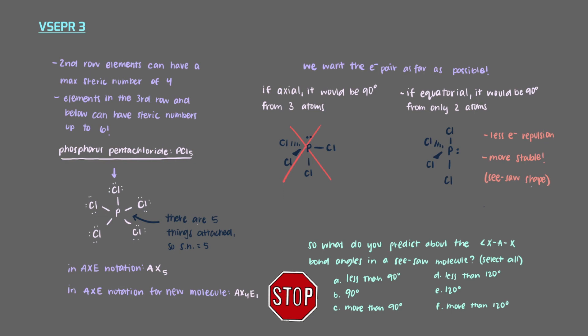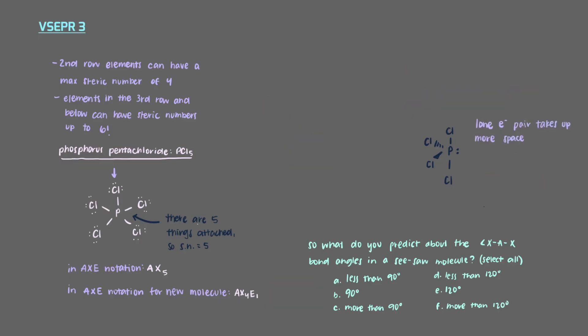So what do we predict about the XAX bond angles in a seesaw molecule? The lone electron pair takes up more space and so it pushes the other atoms away from itself and towards each other. The same is true here. Trigonal bipyramidal molecules have 90 degree and 120 degree bond angles. In seesaw shaped molecules, those angles are a little less than 90 degrees and a little less than 120 degrees.